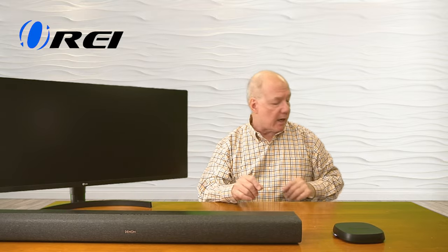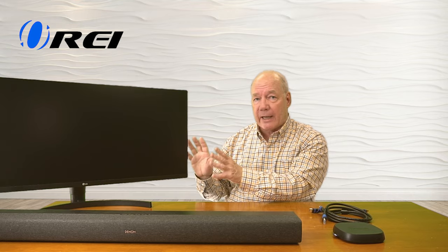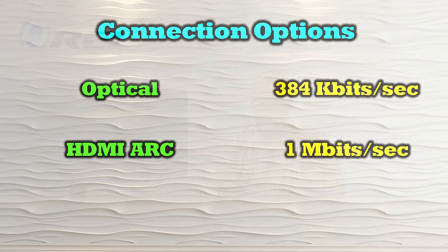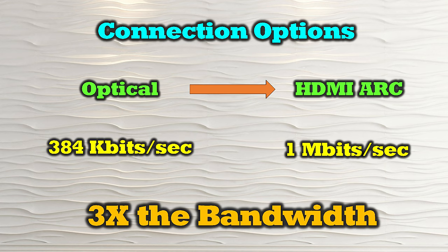In 2009, the HDMI ARC standard was introduced. HDMI typically was a one-way connection sending audio and video from the media device to your display, but ARC — Audio Return Channel — introduces a two-way communication channel over HDMI. If your display has an HDMI ARC port, you can connect an HDMI cable from the display to your soundbar, giving you a much bigger bandwidth — up to one megabit per second, which is three times the bandwidth of optical — meaning better quality audio.